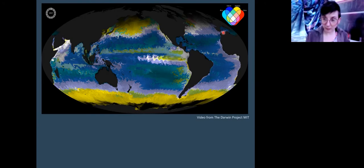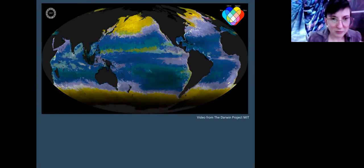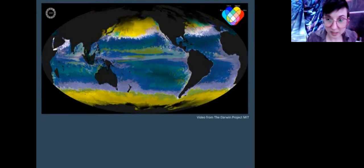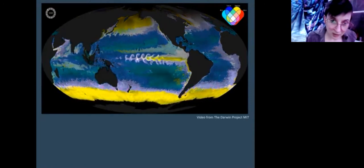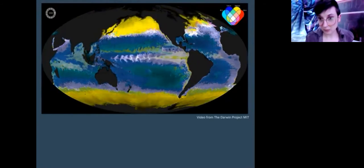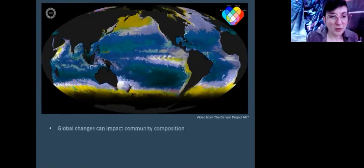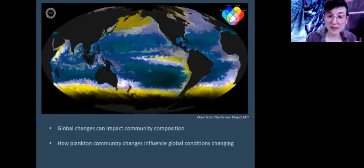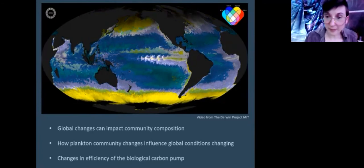We're starting in 1997 in January. You can really see this yellow changing as we move into the summer. And then when we get into winter, it gets really yellow in the south. So that's some of those factors that I just discussed—your seasonal changes, the amount of light and temperatures, the rivers that flow in here. Oftentimes in springs or right when it's starting to get warm, you get a lot more river flow into the oceans, which brings tons of nutrients as well. My main focus here is that global changes can impact community composition, and plankton community shifts can influence global conditions as well. And those two things are also going to change how efficient the biological carbon pump is.